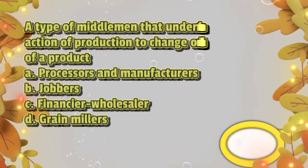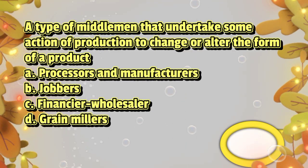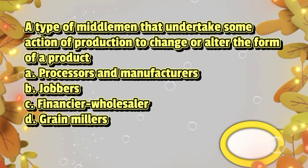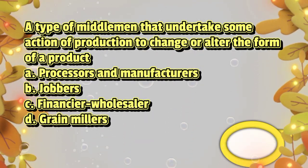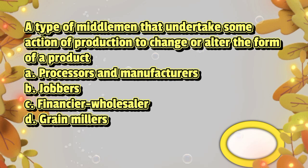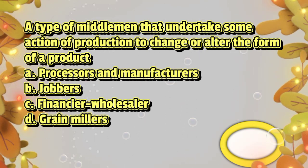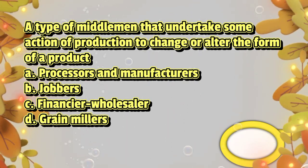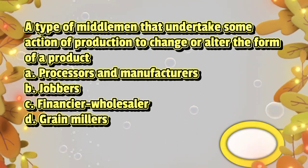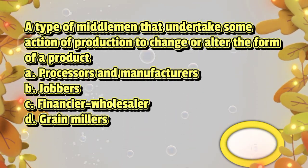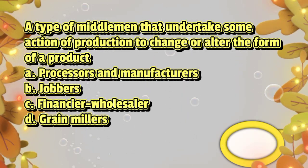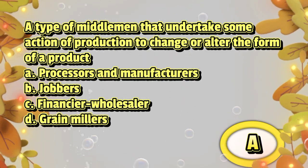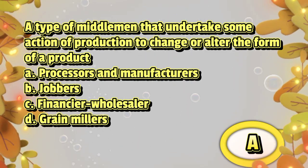A type of middlemen that undertake some action of production to change or alter the form of a product. A. Processors and manufacturers, B. Jobbers, C. Financier wholesaler, D. Grain millers. The answer is letter A.